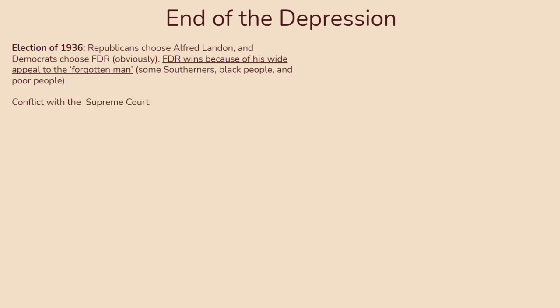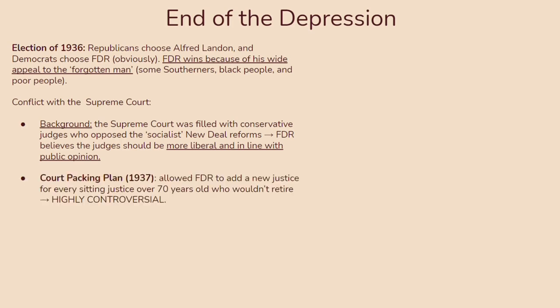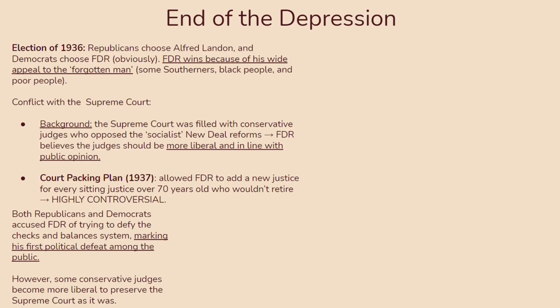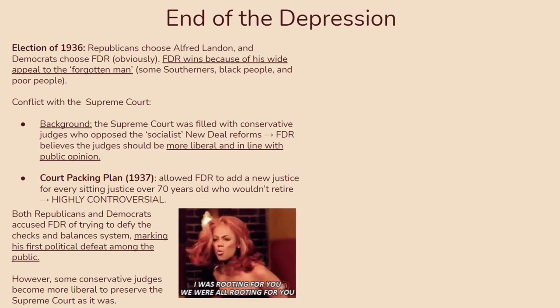However, FDR was going to lose some of his popularity following a conflict with the Supreme Court. At the time, the Supreme Court was filled with conservative judges who opposed what they called Socialist New Deal reforms. FDR believed the judges should be more liberal and in line with public opinion. So he created a court packing plan in 1937, which allowed him to add a new justice for every sitting justice over 70 years old who wasn't going to retire. It was very controversial — both Republicans and Democrats accused FDR of trying to defy the checks and balances system, marking his first major political defeat because of such bipartisan criticism.